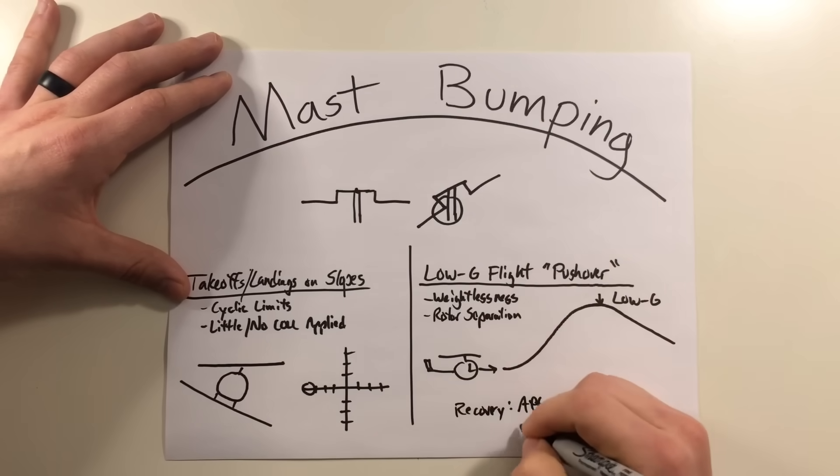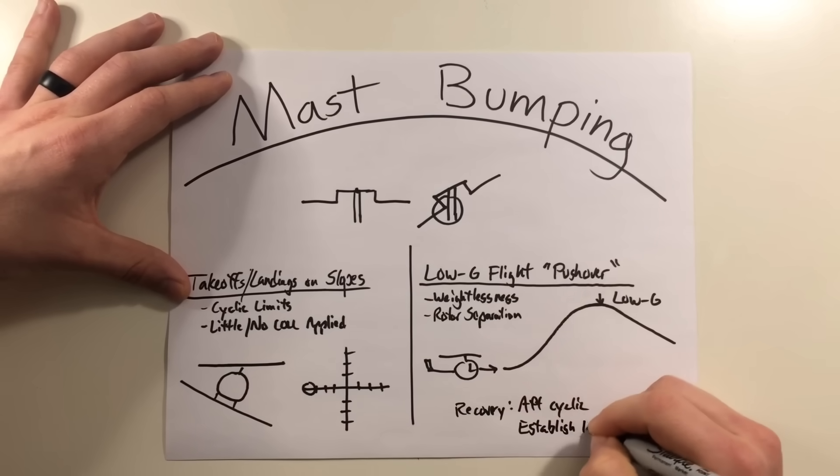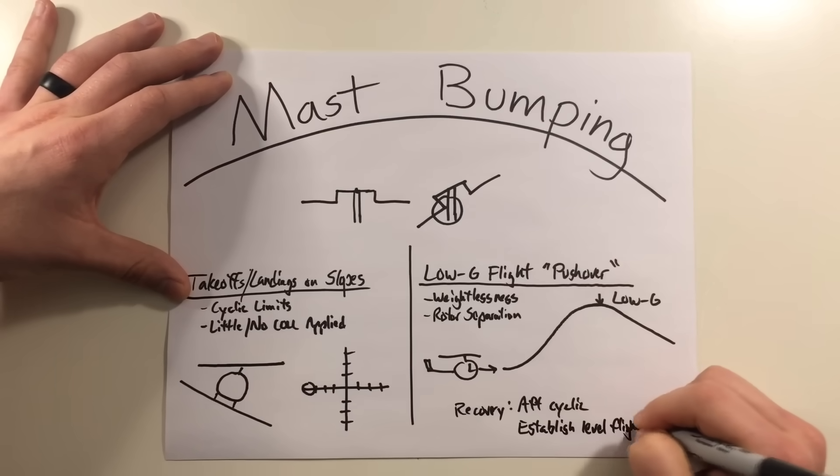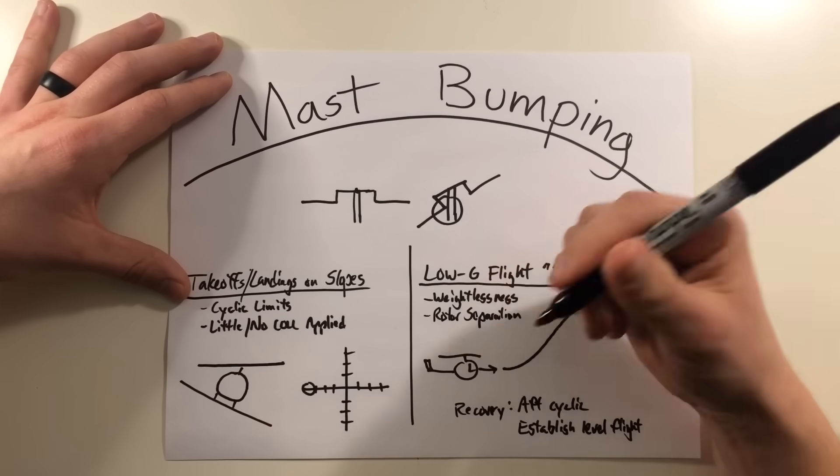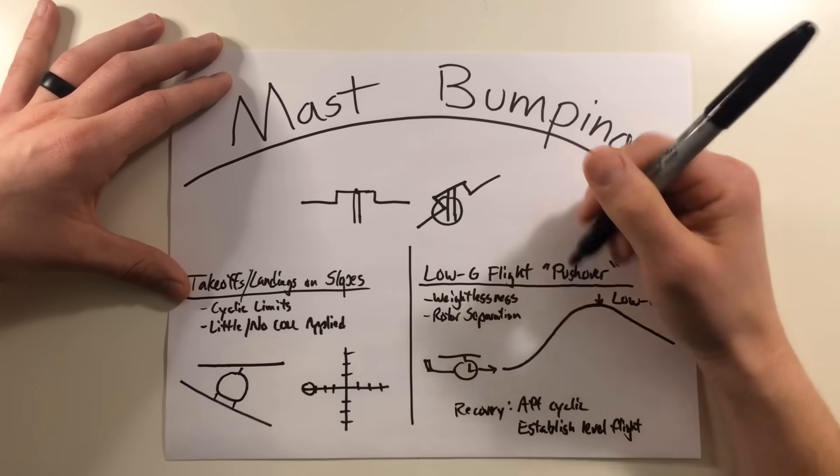So you want to apply that aft cyclic and establish some kind of level flight. And by all means, do not reduce the collective at this point because you want the rotor to be loaded. You don't want it to unload while you're making these corrections.